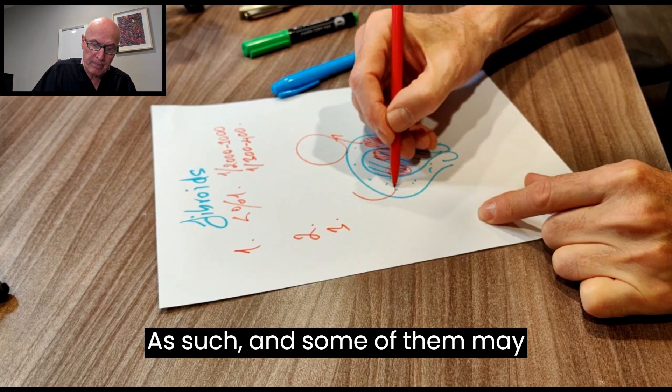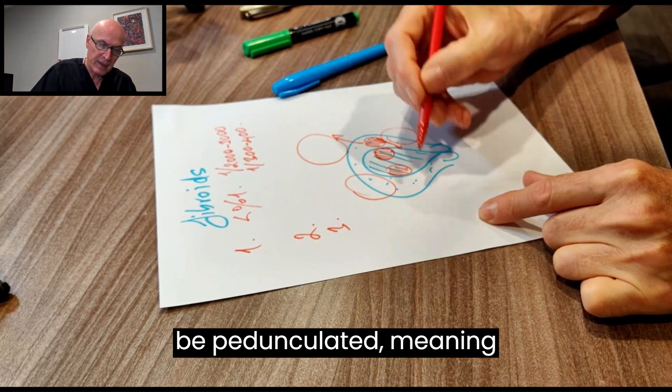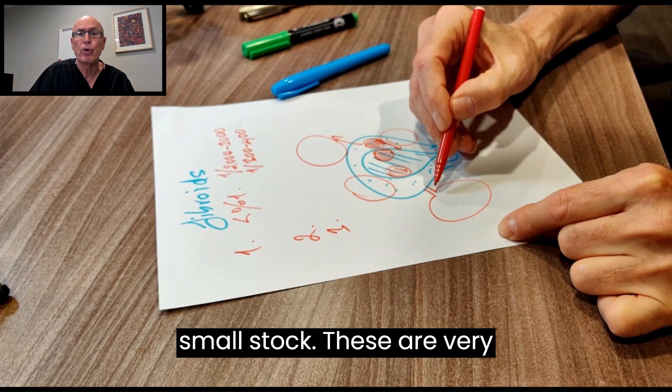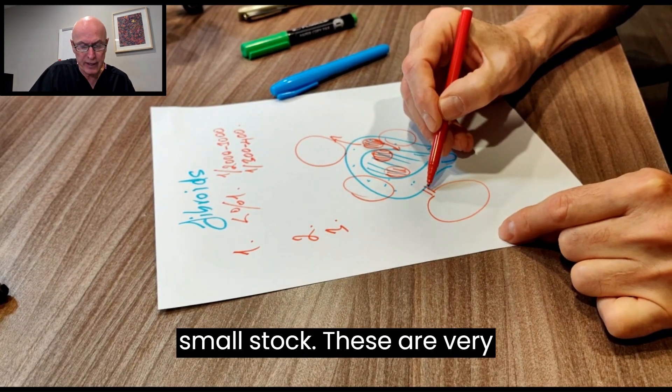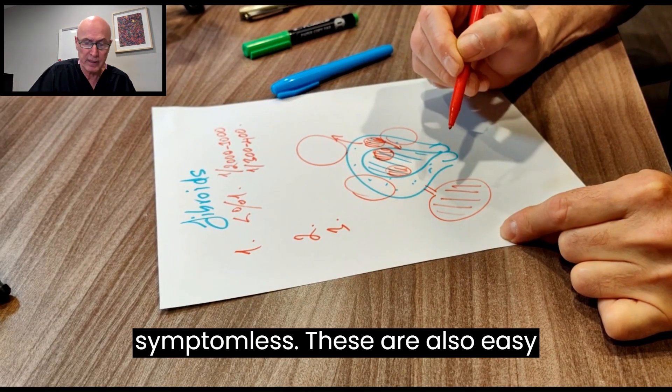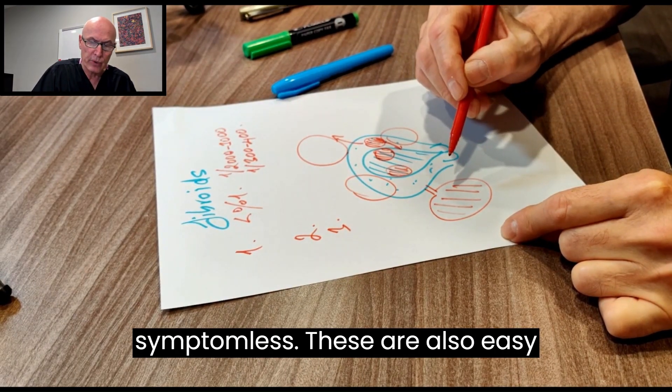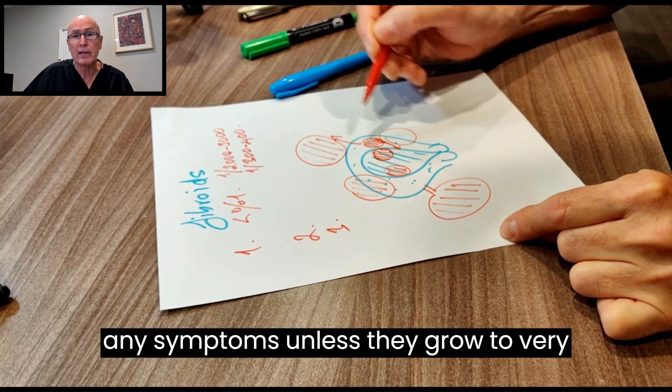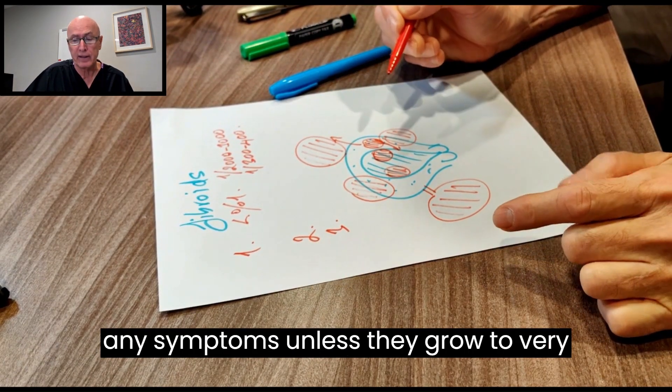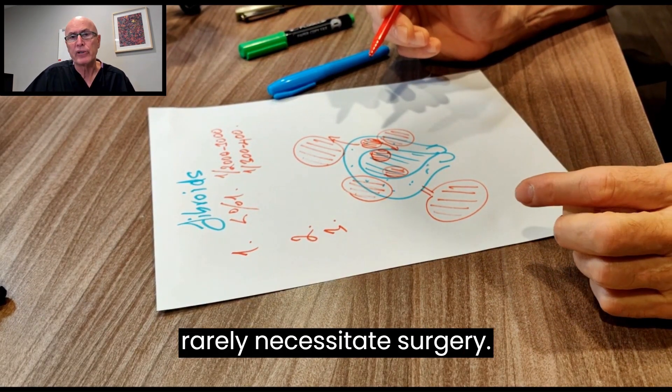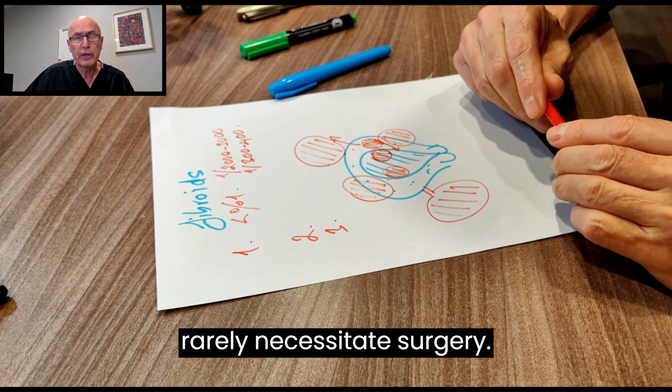Some of them may be pedunculated, meaning attached to the uterus with a very small stalk. These are very easy to remove, but they are usually symptomless. They also do not cause any symptoms unless they grow to very large dimensions. Overall, fibroids rarely necessitate surgery.